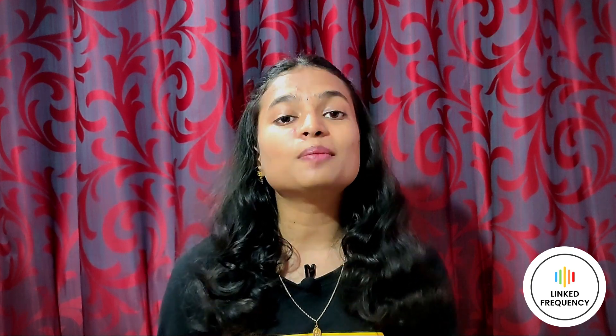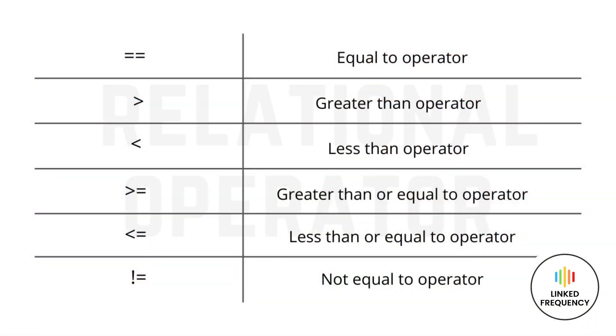Moving on to relational operators. These operators are used to compare the value of two operands. If the comparison is true it returns 1, and if false it returns 0. Relational operators are used in decision making and in loops. The relational operators are: equal to, less than, greater than, not equal to, greater than or equal to, and less than or equal to.